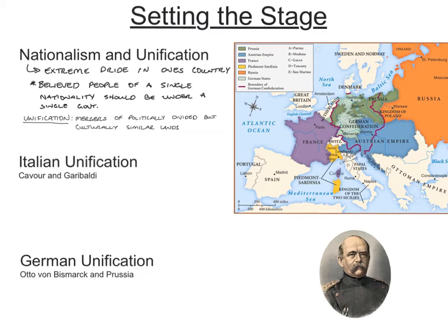Before we get started with Africa, I want to set the stage with what is going on in Europe. There's lots of nationalism and unification going on. Nationalism is basically extreme pride in one's country. Typically, nationalists were not loyal to kings — they were loyal to their people. Initially, rulers saw nationalism as a force of disunity because of the French Revolution. But over time, they figured out they could use nationalism to their advantage. You start to see people in the German Confederation and in the Italian city-states push for unification — the merger of politically divided but culturally similar lands.